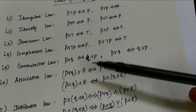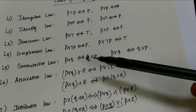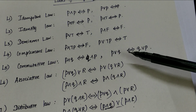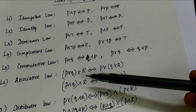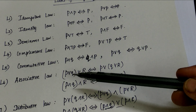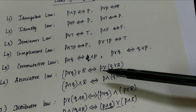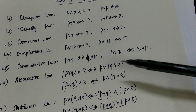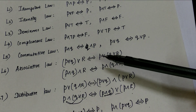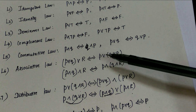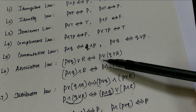Commutative law: P and Q equals Q and P, and similarly for OR. Associative law: P or Q or R equals P or Q or R — just replacing the position of the statements.